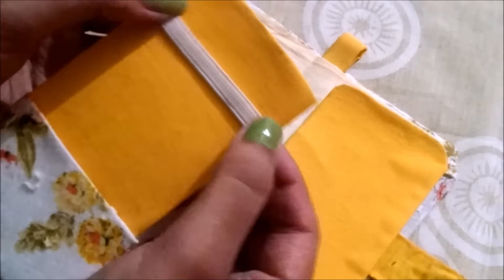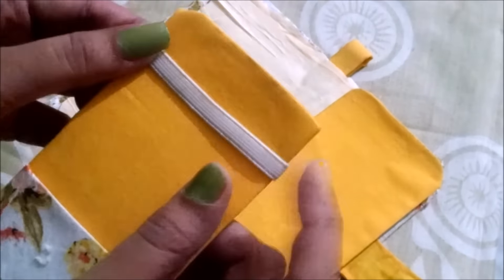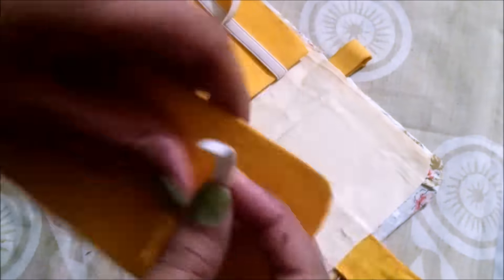Take the elastic band and wrap it around like this on the one of the template and paste it. And similarly, on the other template, paste it on all the four corners diagonally.